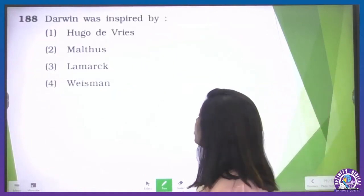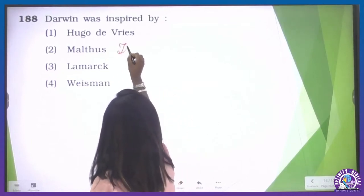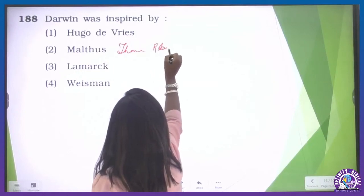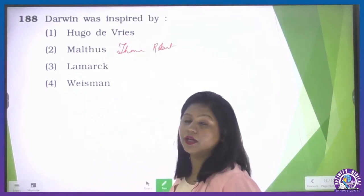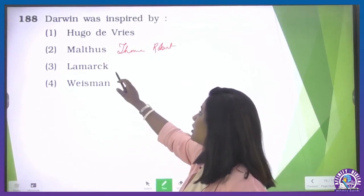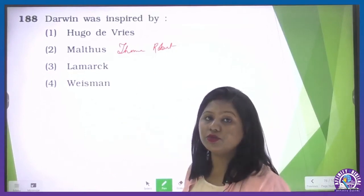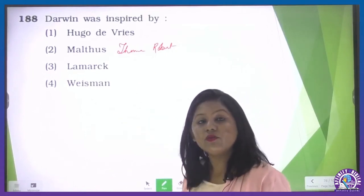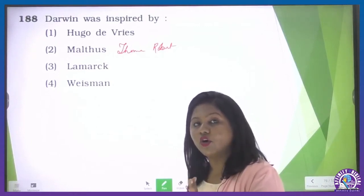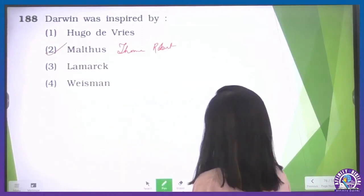Darwin was inspired by Thomas Robert Malthus, who gave an essay on population. Lamarck proposed a theory that Weismann rejected. Hugo de Vries gave the mutation theory. Darwin was influenced by two authors: Alfred Wallace and Thomas Robert Malthus. So this is our correct option.